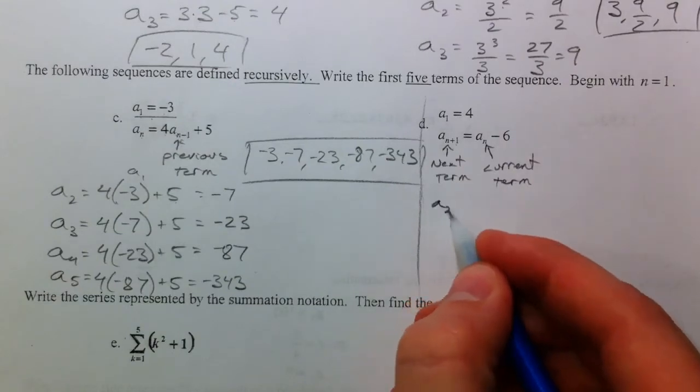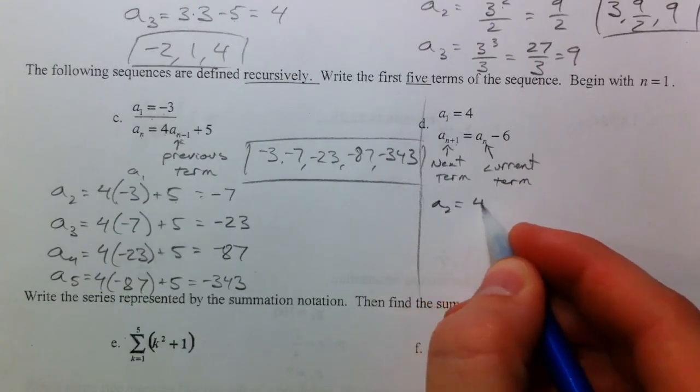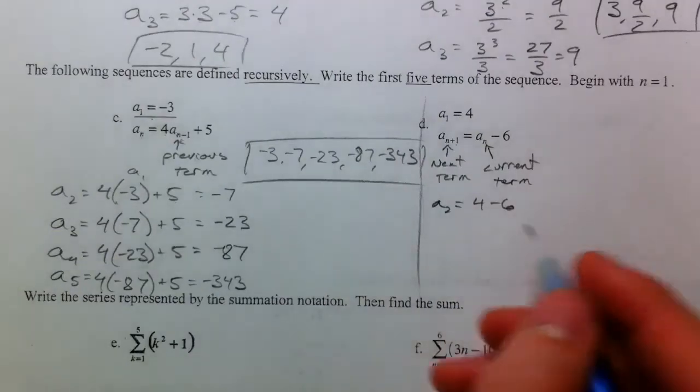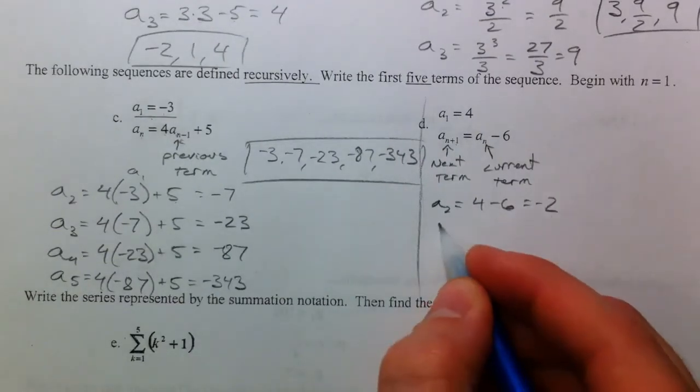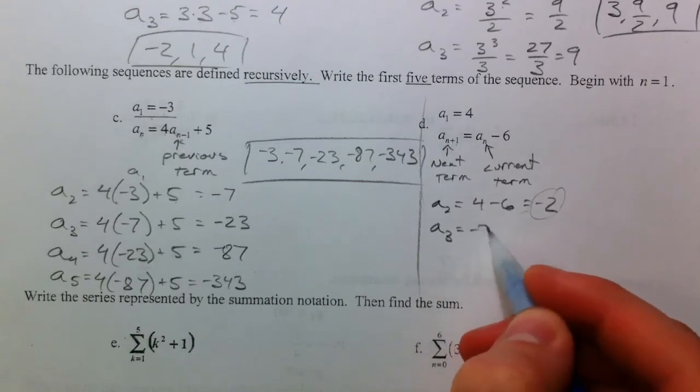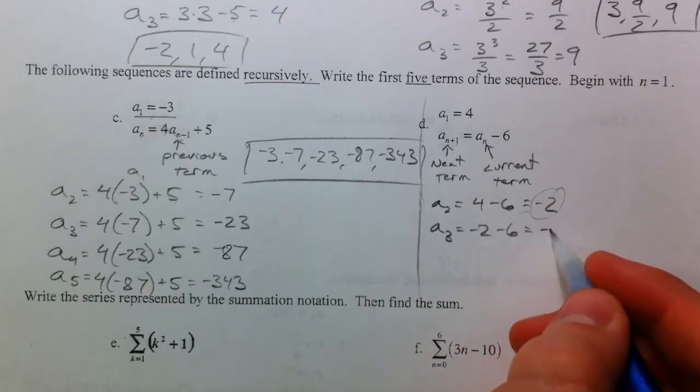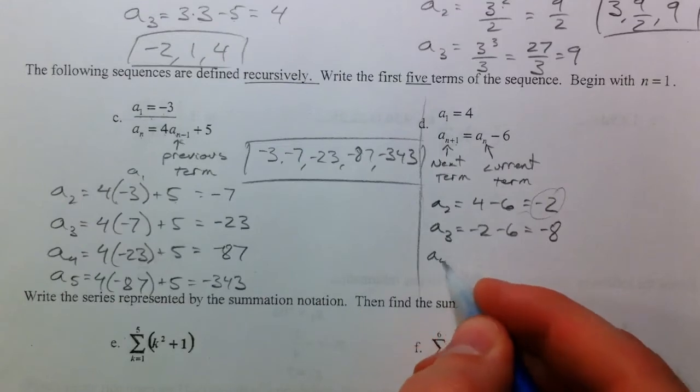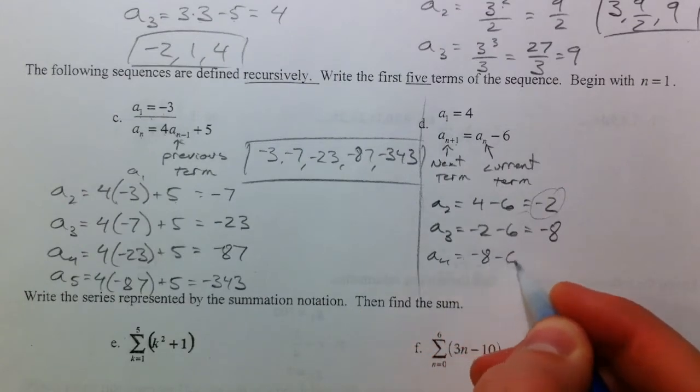To find a sub 2, we need 4 minus 6, negative 2. A sub 3, we're going to use negative 2 minus 6, negative 8. A sub 4, we're going to use negative 8 minus 6, negative 14.